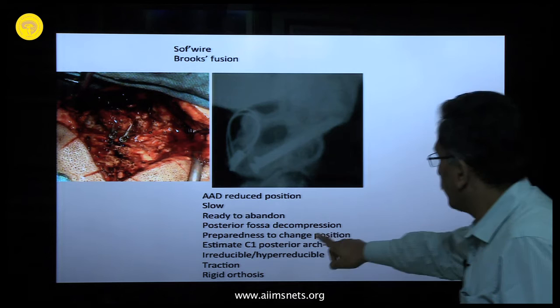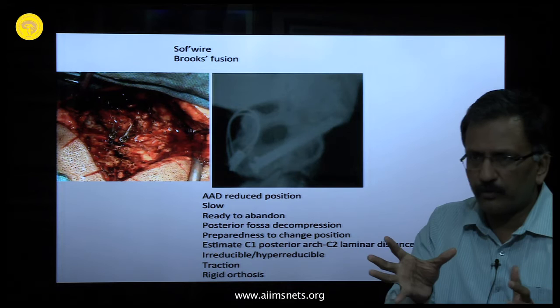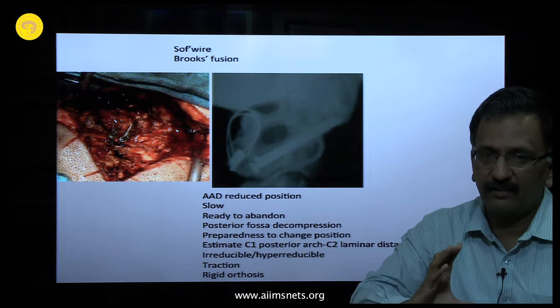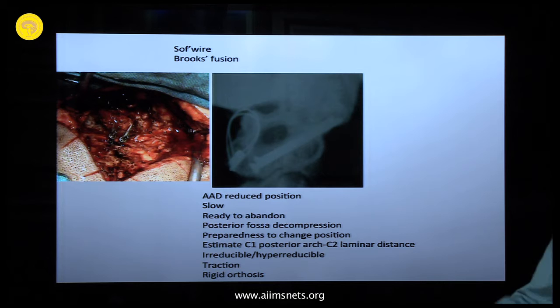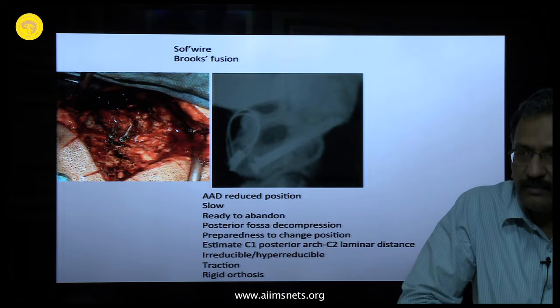Another important point most people don't emphasize: when doing C1-C2 fusion, be prepared to change the patient's head position. If you are not getting space, immediately extend the head a little. Come to the head end of the table — with the drapes, just hold and extend slightly — and you will gain enough space.